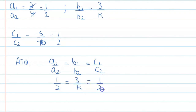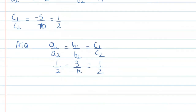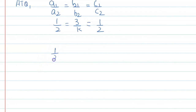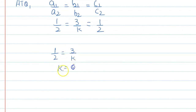To find the value of k, we take any two equal ratios. Taking 1/2 = 3/k and cross-multiplying, we get k = 6.